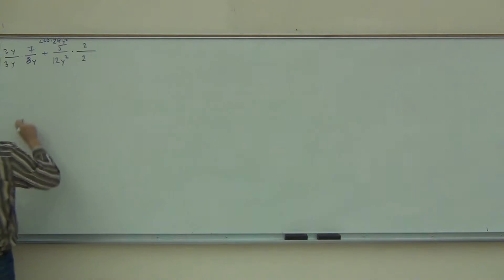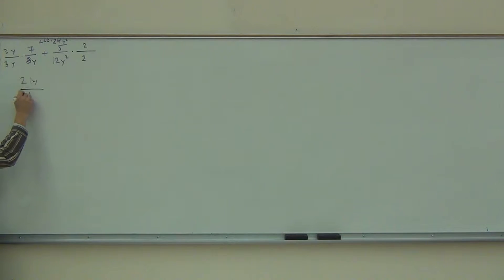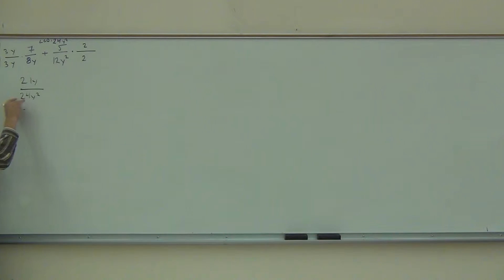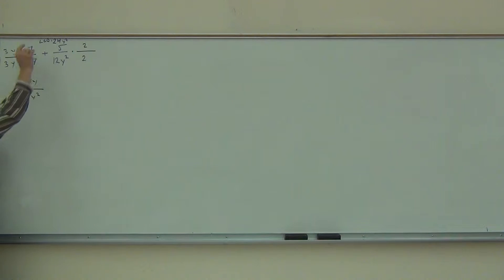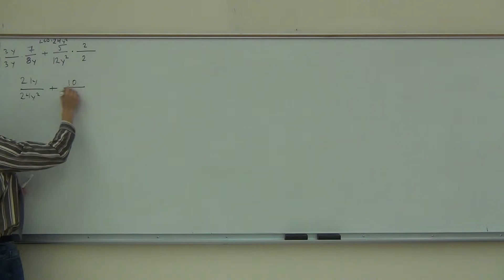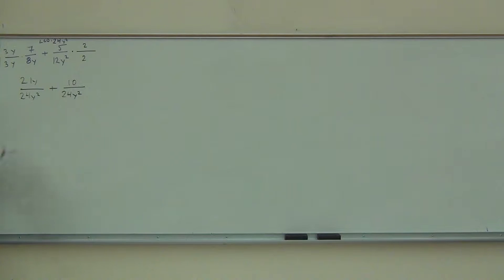Now we figure out what these fractions are. 3y times 7 gives us 21y. 3y times 8y gives us 24y squared. You're just trying to find that LCD on these denominators, and that's what's telling us what to multiply by. Plus, to get our LCD: 10 over 24y squared.